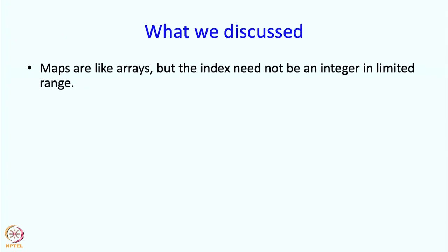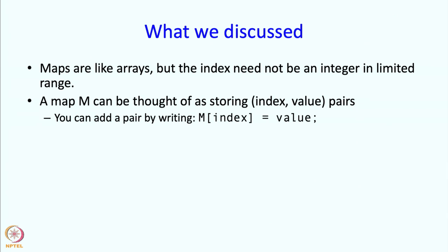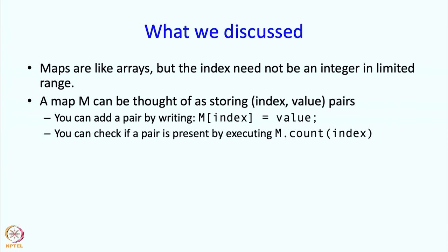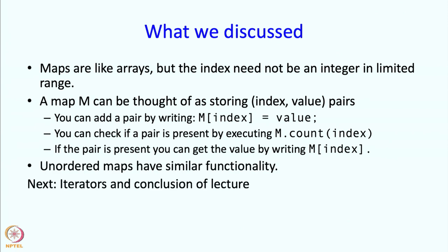So what have we discussed? Maps are like arrays but the index need not be an integer in a limited range. A map m - and this applies to an unordered_map as well - can be thought of as storing index-value pairs. The way to add a pair is m[index] = value. You can check if a pair is present by writing m.count() and checking whether that is greater than 0. You can get the value by writing m[index]. Unordered maps have similar functionality. In the next segment I am going to talk about iterators, and we will conclude this entire lecture sequence.